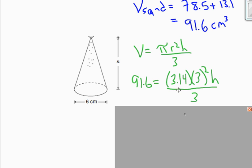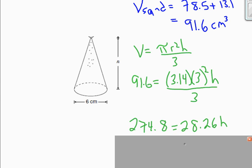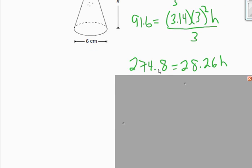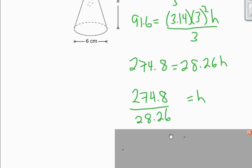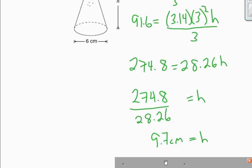So how do I isolate for h? Well, I'm going to start by multiplying by 3. So I'm dividing by 3, to undo that I multiply by 3. So 91.6 times 3 gives me this, and I also did the math here, which is 3.14 times 3 times 3. And then the final step to solve for h is to just divide by 28.26. And that gives me a final answer of 9.7 centimeters for the height of this unshaded cone. Okay, let's look at the next question.